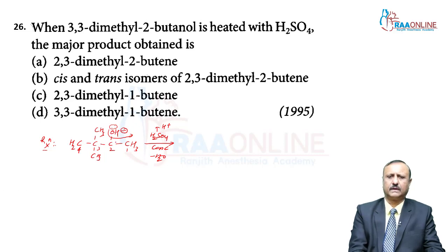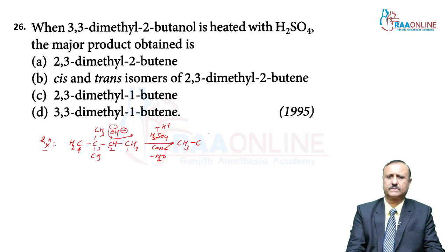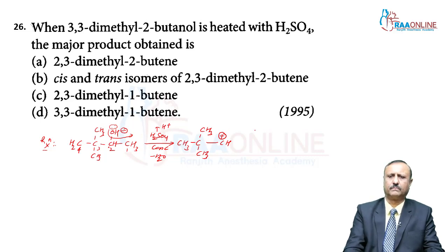After water is removed, a positive charge develops on the second carbon atom, forming a secondary carbocation: C(CH₃)₃–CH⁺. This is called the secondary carbocation, formed by removal of the OH group from the second carbon.